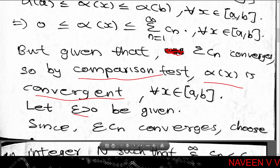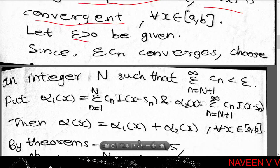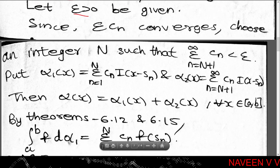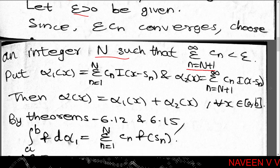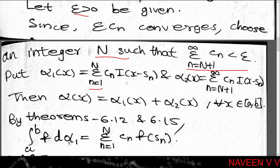For any arbitrary positive real number ε, since Σcₙ is a convergent series, by the definition of convergence, we can choose a positive integer N satisfying the condition Σ(n=N+1 to ∞) cₙ < ε. Now put α₁(x) = Σ(n=1 to N) cₙ · I(x - sₙ) and α₂(x) = Σ(n=N+1 to ∞) cₙ · I(x - sₙ).